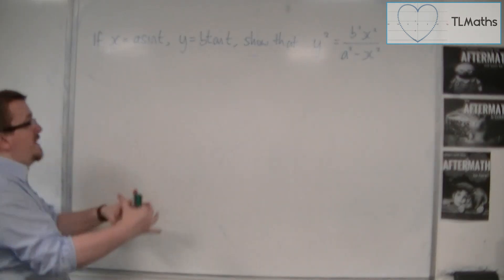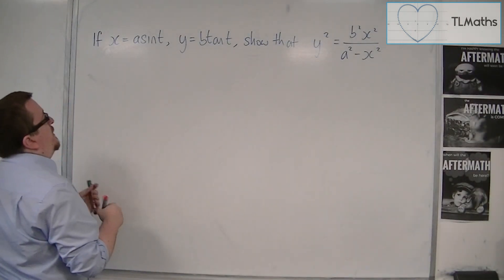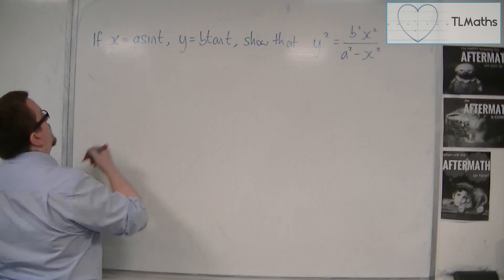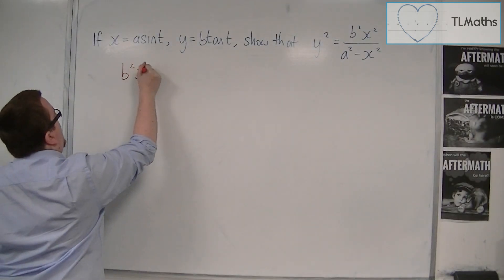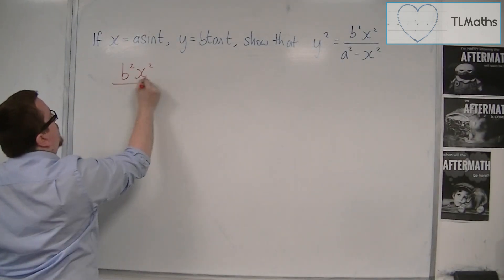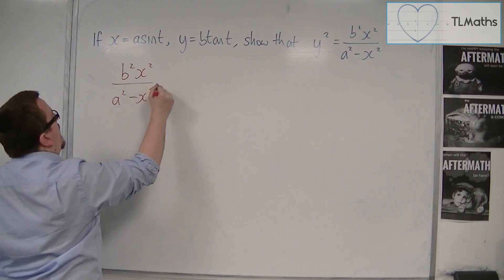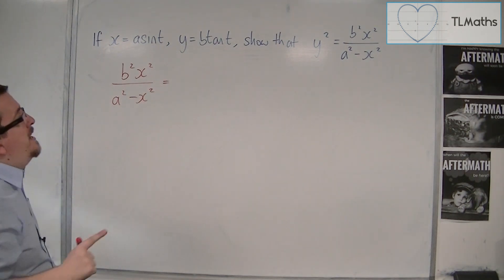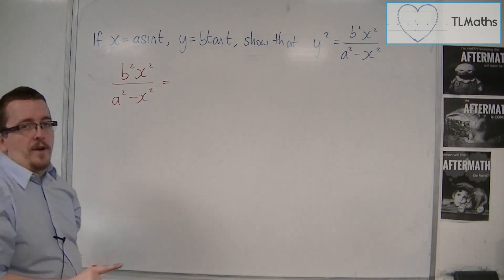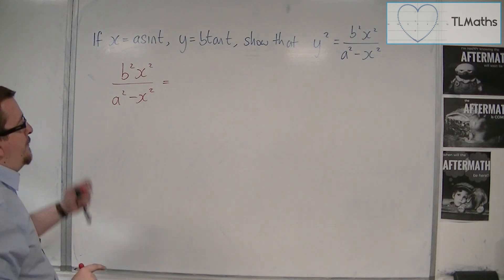What we're going to do is look at the right-hand side. We are going to start with b squared x squared over a squared minus x squared, and show that this is the same as y squared, the left-hand side.